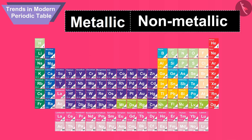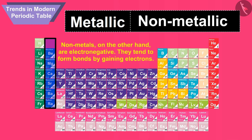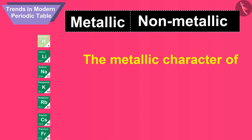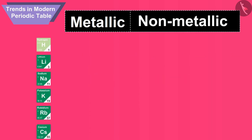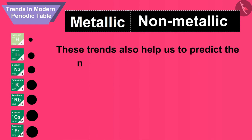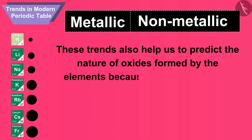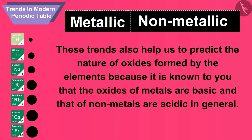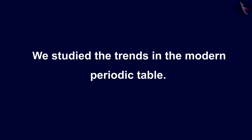Let's discuss the trend of metallic and non-metallic character in the groups. Non-metals, on the other hand, are electronegative — they tend to form bonds by gaining electrons. On going down in a group of the periodic table, the metallic character of elements increases. For example, when we move down in group 1, the metallic character increases from lithium to francium. These trends also help us predict the nature of oxides formed by the elements, since oxides of metals are basic and those of non-metals are acidic in general. In this video, we studied the trends in the modern periodic table.